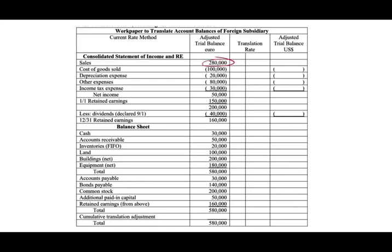Looking at the trial balance in euros: sales of 280,000, cost of goods sold of 100,000, depreciation expense of 20,000, other expenses of 80,000, income tax of 30,000, giving net income in euros of 50,000. Beginning retained earnings of 150,000 plus net income of 50,000 gives 200,000, minus dividends gives ending retained earnings of 160,000, which flows to the balance sheet. On the balance sheet: cash 30,000, receivables 50,000, inventory 20,000, land, building, equipment — total assets 580,000. Liabilities include accounts payable, bonds payable, plus common stock, additional paid-in capital, and retained earnings of 160,000. There is a translation adjustment we will work with shortly.